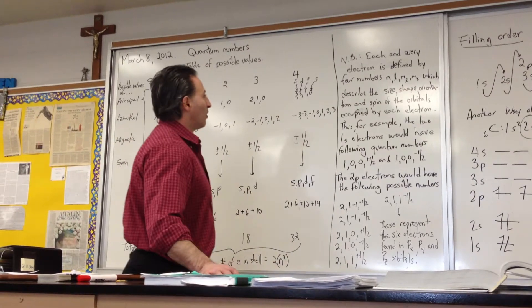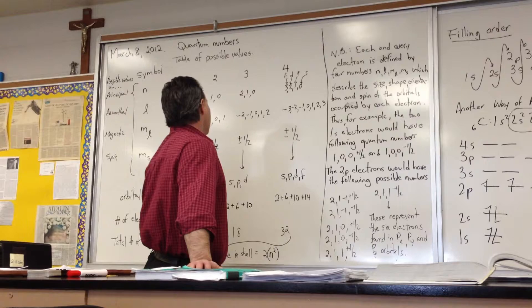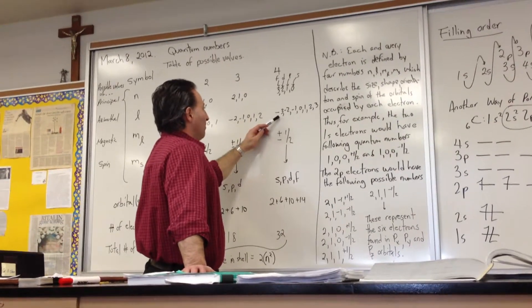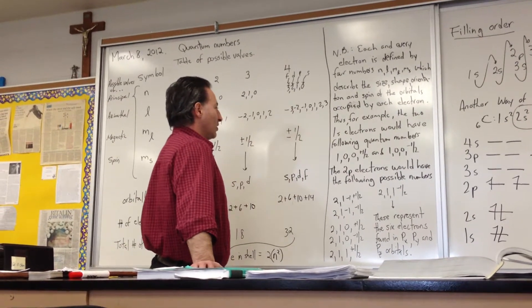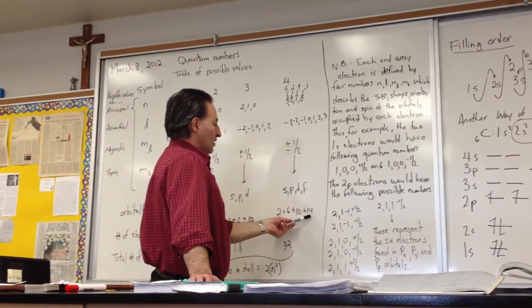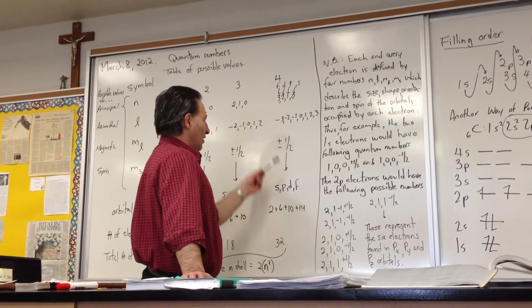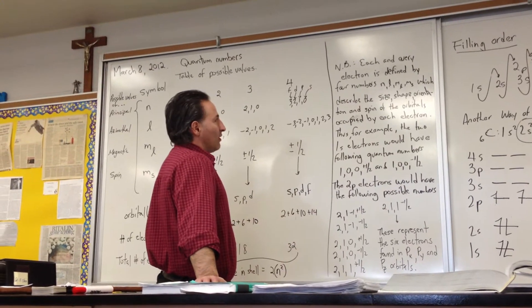Lastly, if the principal quantum number is four, you can have f, d, p, or s orbitals depending on the value of l. And if m sub l is plus or minus l, then we see that it gives you seven different possibilities, each with two electrons. That gives us 14 electrons in the f orbitals. So if the principal quantum number is four, you can have up to 32 electrons in that level.